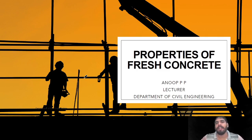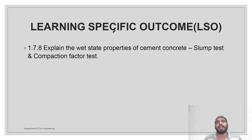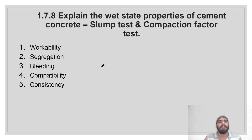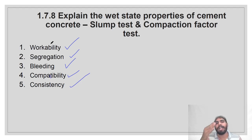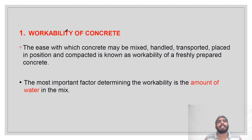Hello everyone, today we are going to discuss the properties of fresh concrete as per learning specific outcome 1.7.8. There are five fresh properties: workability, segregation, bleeding, compactability, and consistency. Workability we have already discussed; the other four we are going to discuss now.